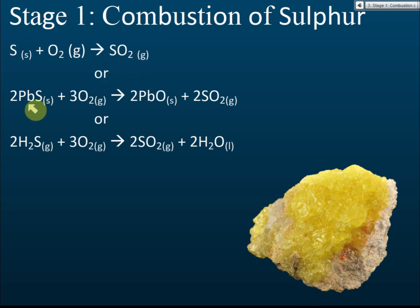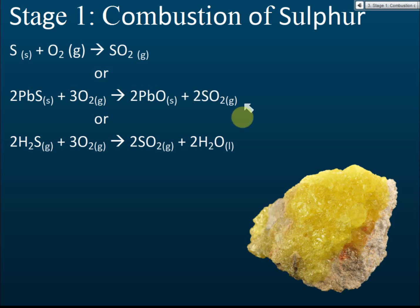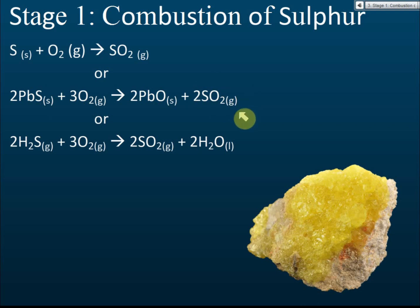Other than burning sulfur directly, during the extraction of lead from lead sulfide, we heat lead sulfide in oxygen and obtain lead oxide and sulfur dioxide as a side product. This sulfur dioxide is also collected. Additionally, burning hydrogen sulfide gas in oxygen gives sulfur dioxide and water.